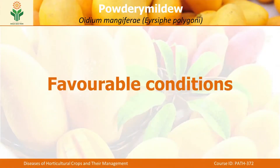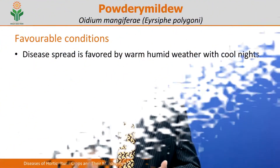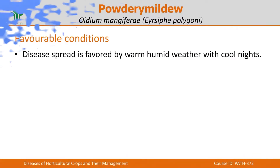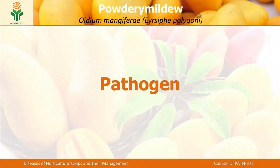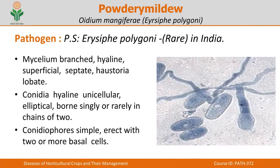Understanding the favorable factors for the pathogen is a key step for management. The disease is favored by warm and humid climate with cooler nights — the pathogen likes to grow in cool nights. Regarding etiology, Oidium mangiferae is the conidial state and is very common in India, but Erysiphe polygoni, the perfect or sexual state, is not available in India — it is very rare.